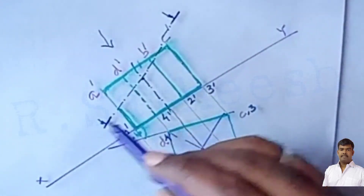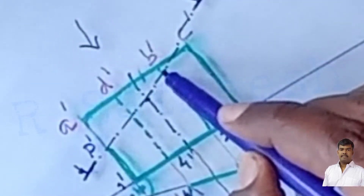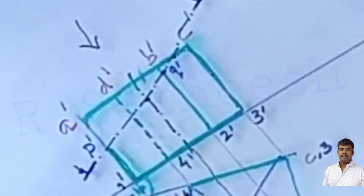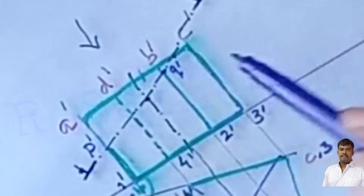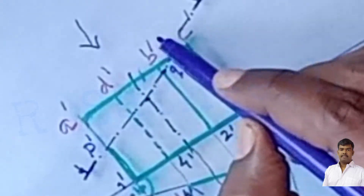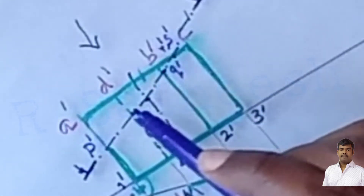After cutting and removing, identify the cutting points on the edges. The cutting plane intersects edge a1 at point p-dash. It intersects edge b2 at point q-dash. Where the cutting plane crosses the horizontal top surface b–c, we get two intersection points, so the point on edge b–c is r-dash, and on edge c–d is s-dash.